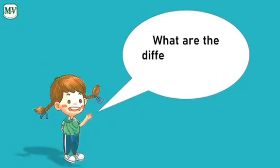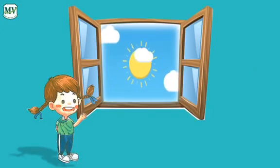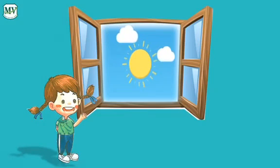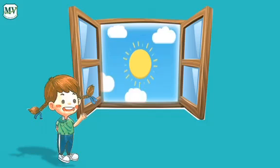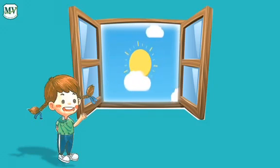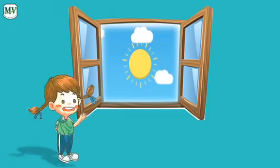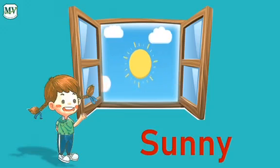What are the different kinds of weather? What can you see through the window? That's right! There is a sun. If we can see the sun brightly shining in the sky, it's sunny.